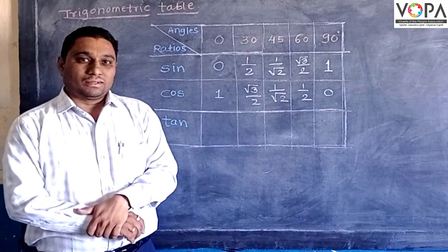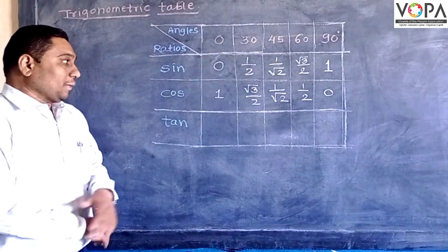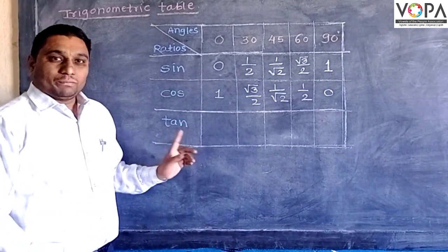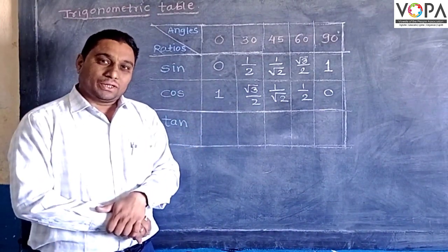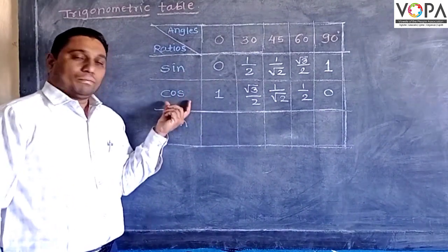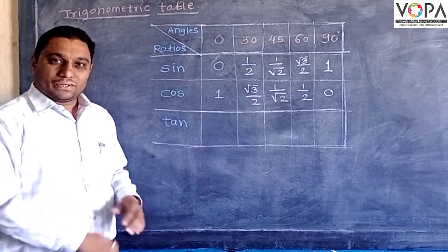Now how is the tangent table made? We know what is meant by the tan ratio: the tan ratio is sine over cosine, that is tangent.